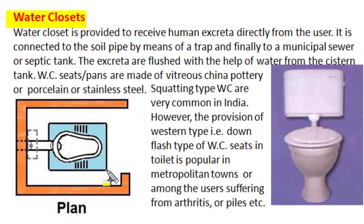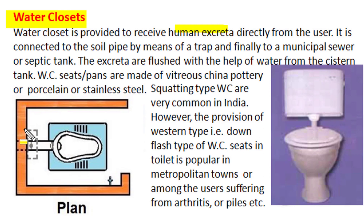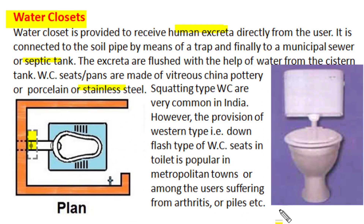All sanitary fittings shall be durable, impervious, and corrosion-resistant, with smooth surfaces that are easily cleaned, conforming to relevant Indian Standards. Water closet (WC) is the most important requirement of the sanitation system. It receives human excreta directly from the person using it, is connected to the soil pipe via a trap, and is finally connected to the municipal sewer or local septic tank. Human excreta are flushed with water from a cistern tank. The WC pan is made of vitreous china, porcelain, or stainless steel.